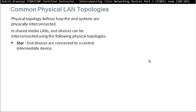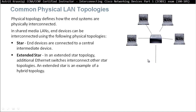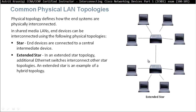The second type of LAN topology is called extended star. In the extended star topology, additional Ethernet switches interconnect other star topologies. An extended star is an example of a hybrid topology. As you can see, we have a star, we just add another switch — that's an extended star. This is the most likely topology on a local area network.